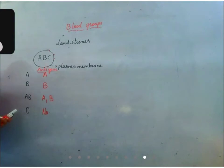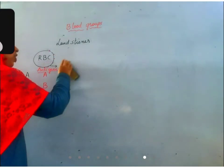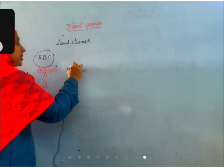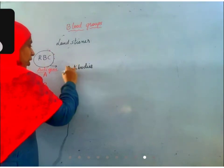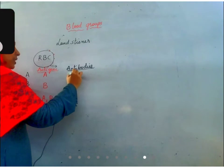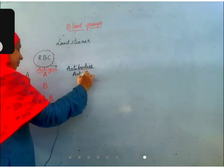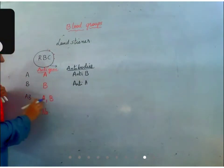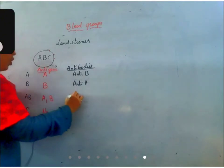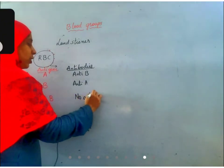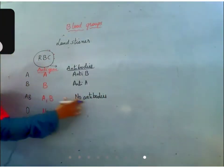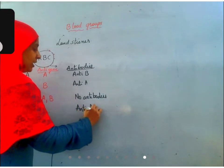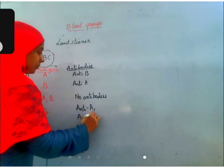These proteins present on the plasma membrane are termed as antigens. Exactly opposite types of antibodies will be present in the blood. Blood group A has anti-B antibodies. Blood group B has anti-A antibodies. Blood group AB has no antibodies. O blood group has both anti-A and anti-B antibodies.